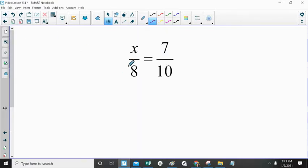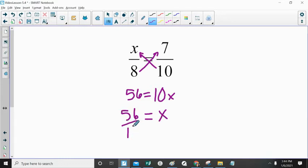In this example, the same process. You use cross-products property to multiply and to get your equation. You isolate your variable and you come up with your answer.